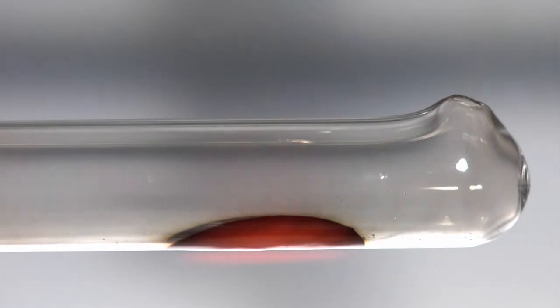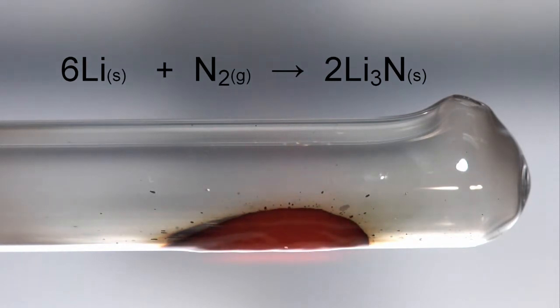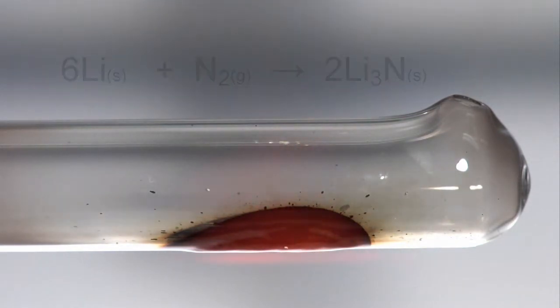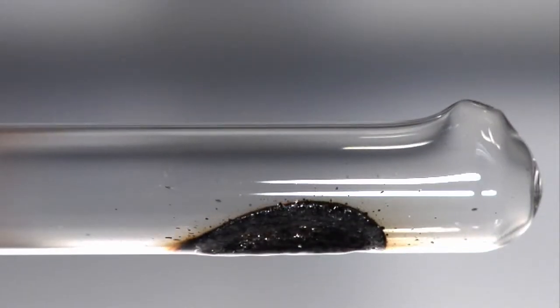The lithium reacts with nitrogen, forming lithium nitride. The lithium nitride is intensely coloured, dark purple, almost black.